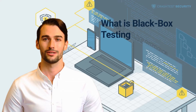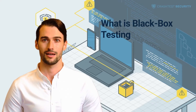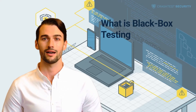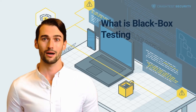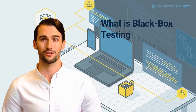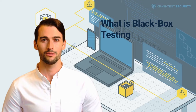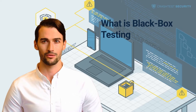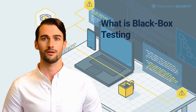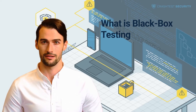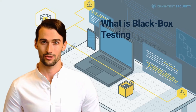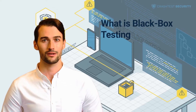Black box security testing is a software testing method used to examine the functionality of an application with limited knowledge of its architecture or internal processes. This approach, also known as closed box testing, relies on outputs from implementing specific execution conditions on selected inputs to observe the application's functionality.